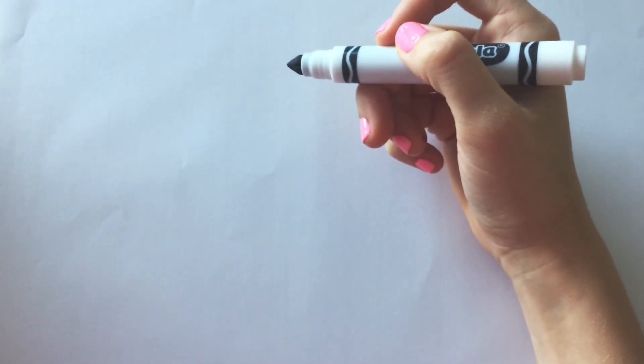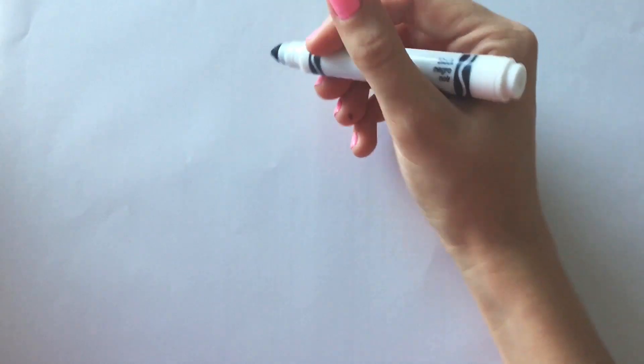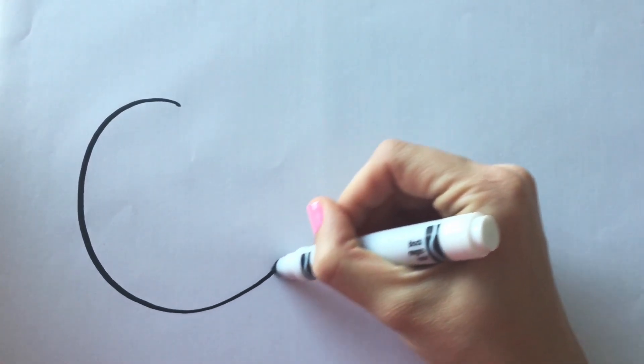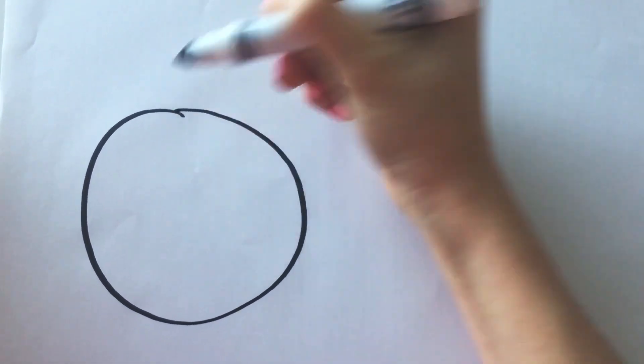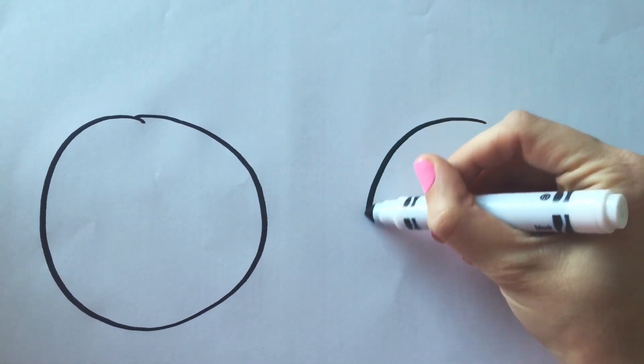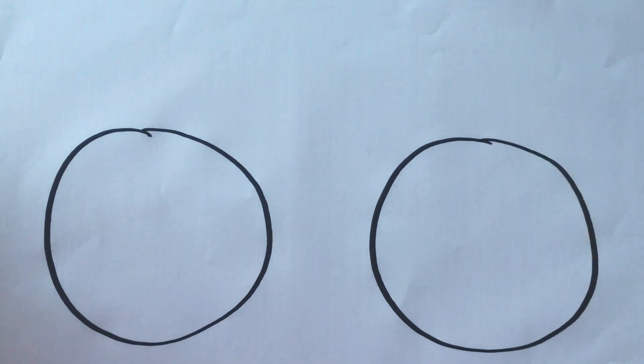So I like to use a black pen to do the outline of the face. Our first step is to draw one big circle, like that. And we're going to draw another big circle. Around we go. And there.